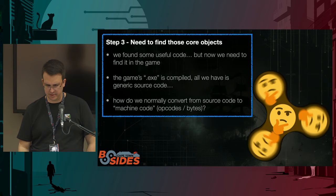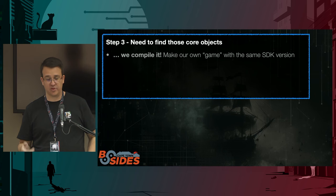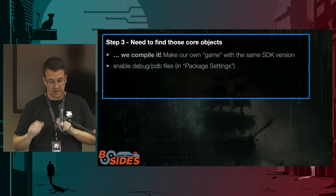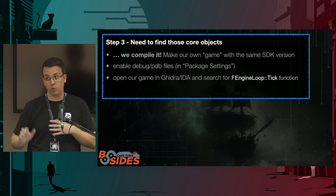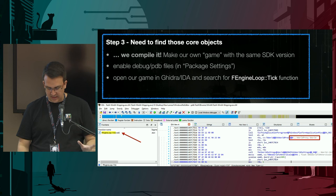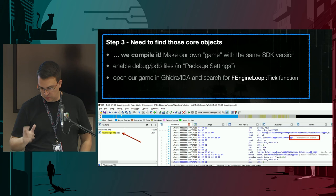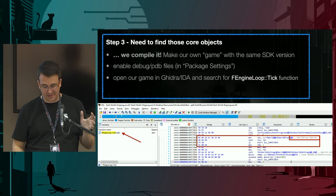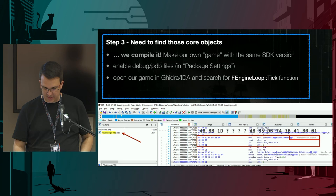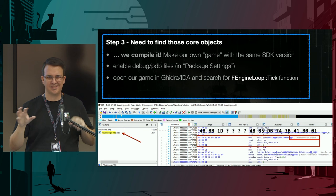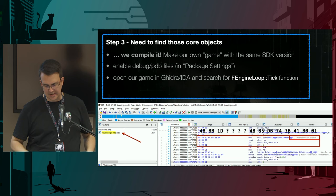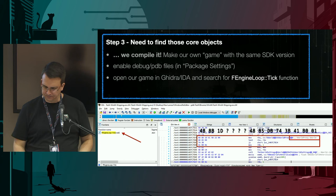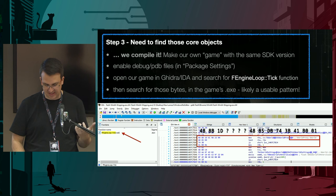The problem is we found code on GitHub in a very generic library that tens or hundreds of thousands of games all use. How do we draw a parallel between any compiled game and this one set of source code? How do we normally go from source code to binary or hex? We compile it. So let's take the Unreal Engine, make a game with the same version, enable an option for debug files, open our game in a debug tool such as Ghidra, and do a bit of reverse engineering. We search for the FEngineLoop::Tick function, find it, and that red box is the UWorldProxy GWorld property we were looking for. We look at the bytes around it, replace all the dynamic addresses with question marks, and we have just enough bytes around that space to use as a fingerprint.